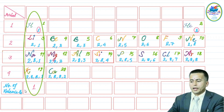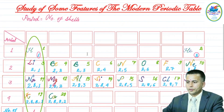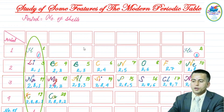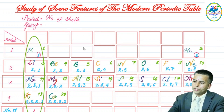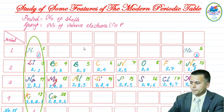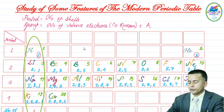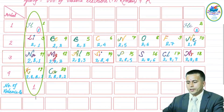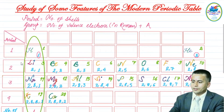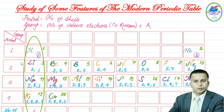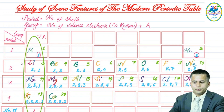The rule for finding the group number is: Group = number of valence electrons written in Roman numerals, plus the capital letter A. Since hydrogen, lithium, sodium, and potassium all have one valence electron, one in Roman numerals is I, so they all belong to Group IA.